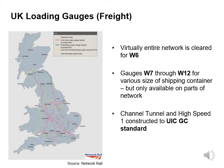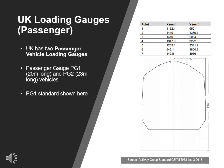Virtually the entire UK network is cleared for W6. Gauges W7 through W12 cater for various sizes of shipping container but are only available on parts of the network. The Channel Tunnel and High Speed 1 line is constructed to UIC GC standard. In terms of passenger loading gauges, the UK has two: Passenger Gauge PG1 for 20-metre-long vehicles, and Passenger Gauge 2 for 23-metre-long vehicles.